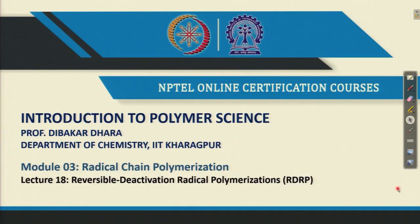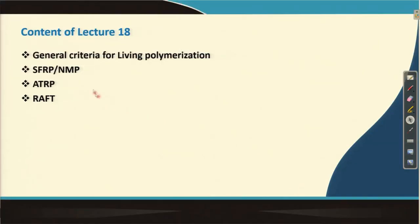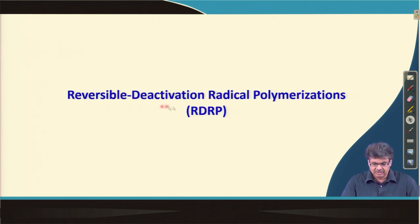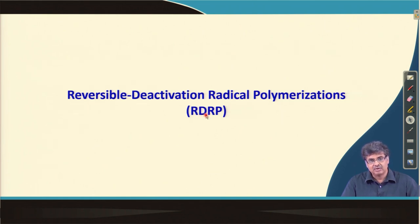Welcome back. In this lecture 18, I will discuss reversible deactivation radical polymerizations, or in short RDRP. These are the topics which I plan to cover, and the full form of these terms will be discussed when necessary. Earlier, this polymerization used to be known as living radical polymerization or controlled radical polymerization. All three — living radical polymerization, controlled radical polymerization, or RDRP — are basically the same type of polymerization.